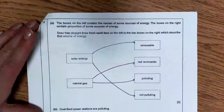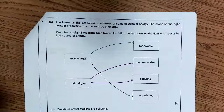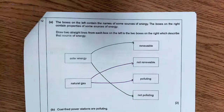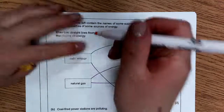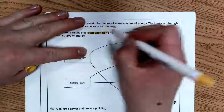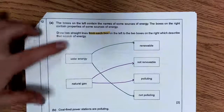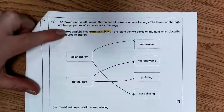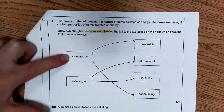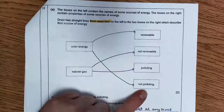Question 12 was done okay, but a few of you got really mixed up. The boxes on the left contain the names of some sources of energy; the boxes on the right contain properties. Draw two straight lines — they even bolded it — from each box on the left to two boxes on the right. Some of you only drew two total. Solar energy is renewable and does not emit greenhouse gases, so it's not polluting.